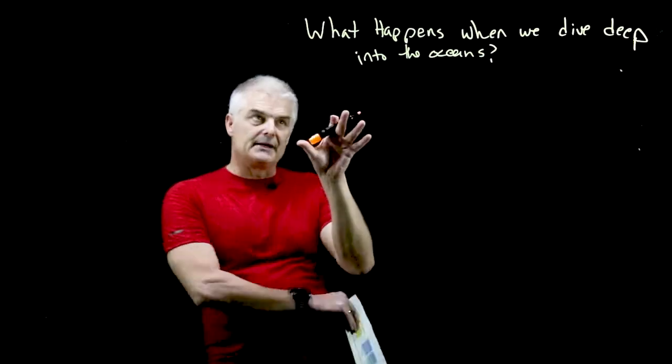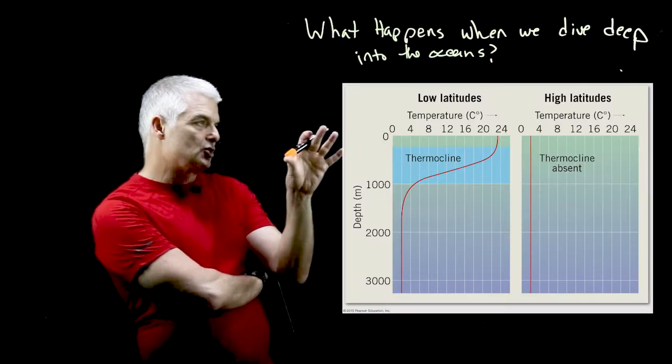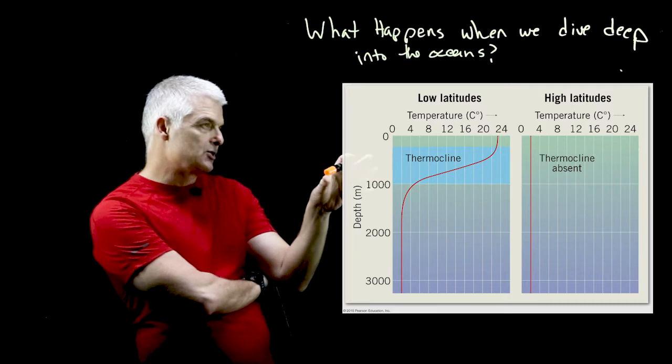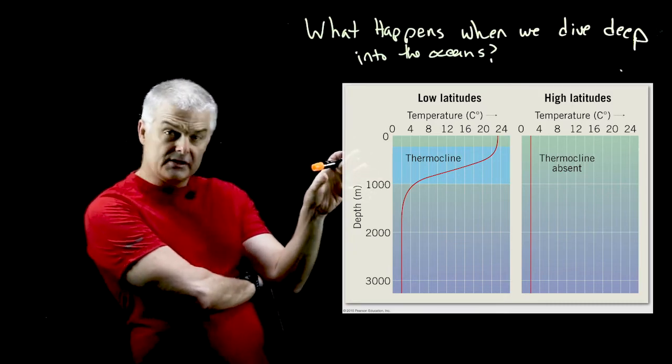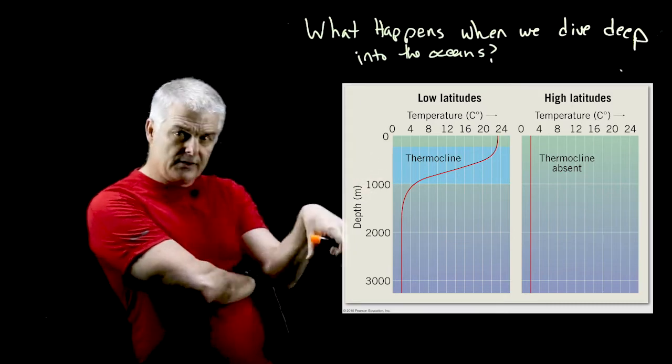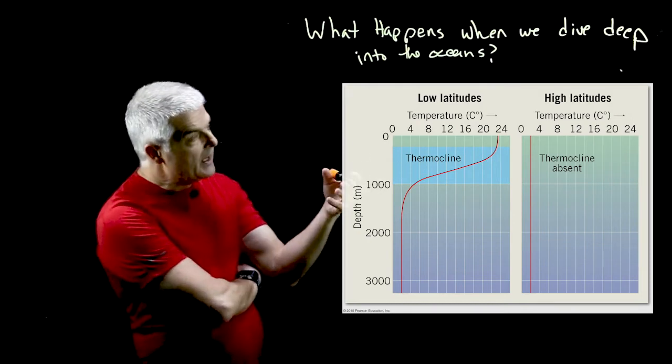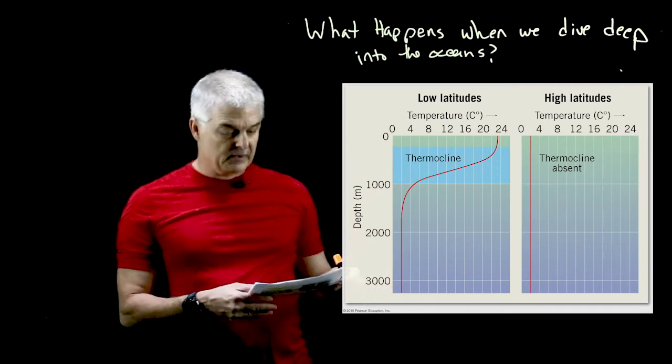So we want to talk about some graphs. Take a look at these graphs. Now they're showing something at what are called low latitudes and high latitudes and they're measuring the temperature difference. So as we go down in the ocean something changes to the temperature, well at least in one case, and not in the other. So let's talk about what this means.